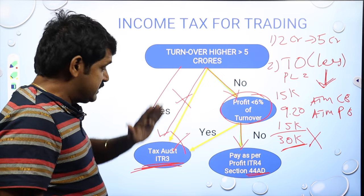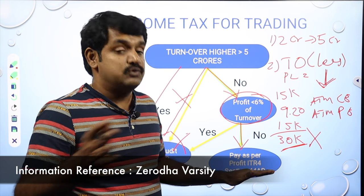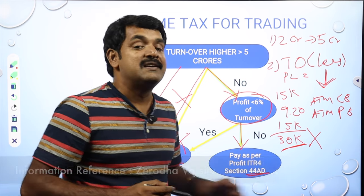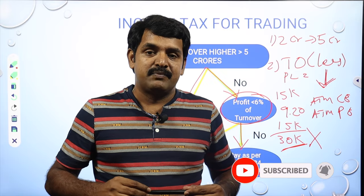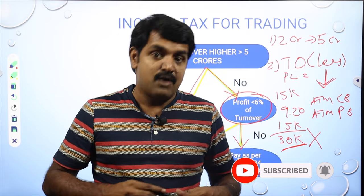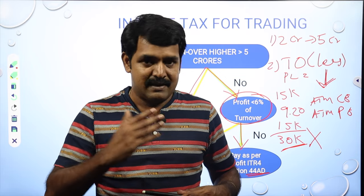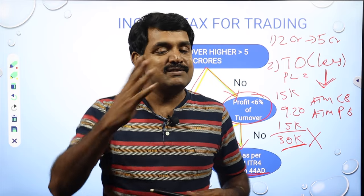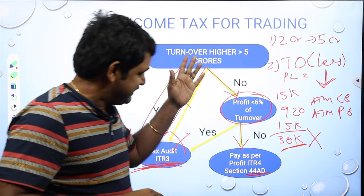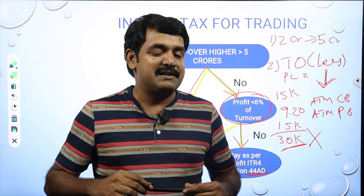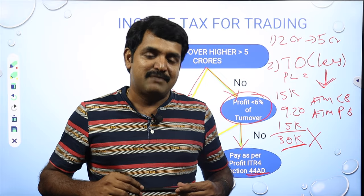So this is a good option for retail traders — you don't need to do tax auditing, and if you want you can use Section 44AD, but only after consulting with your CA. Now you know the benefits: how you can bypass CA auditing and how you can decrease your income tax burden. I'm not a CA — I'm a trader, software engineer, and mathematician — so please consult a CA before you do any income tax filing. I hope this video was really useful. Thanks for watching!